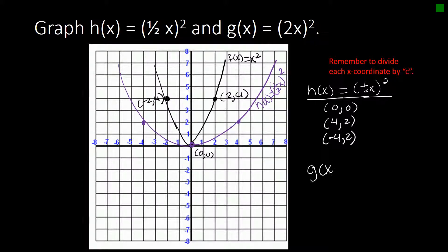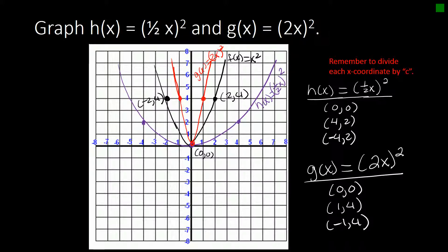Suppose we have our g of x. We have 2x quantity squared. Again, 0, 0 is not going to change. We look at our point 2, 4. If we divide by 2, we're going to have 1, 4 and negative 1, 4. So let's draw this in red. We still have our 0, 0. We have 1, 4 and negative 1, 4. So this is the graph of our g of x equals 2x squared.